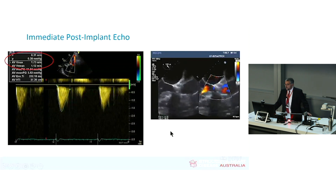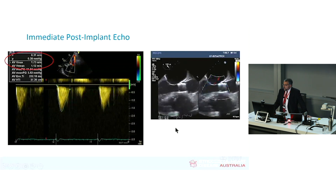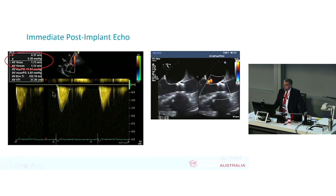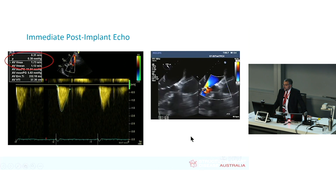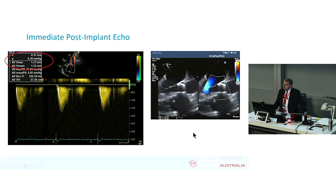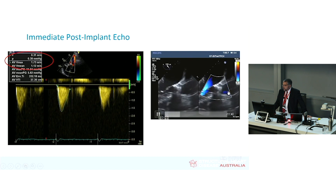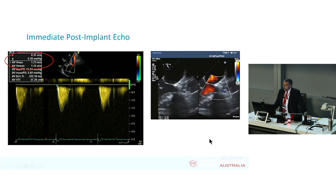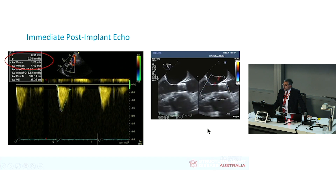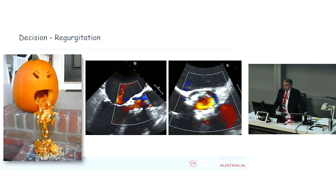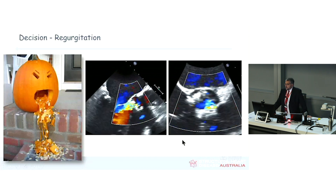After the valve is in — in the room or the next morning — you can look for leaks and assess gradients, and look at the height of the device. In terms of the decision process, if there are issues like the valve being too high, too low, or leaking, it might prompt us to decide to put in a second valve-in-valve.